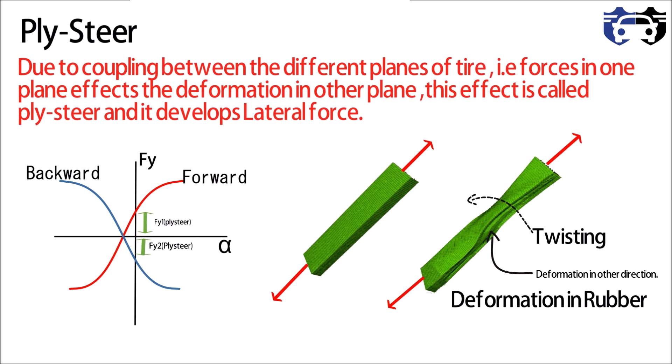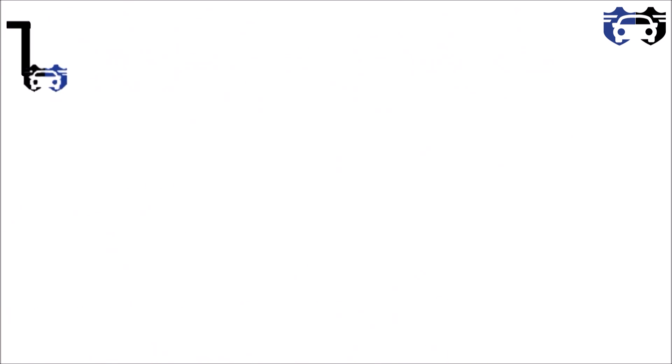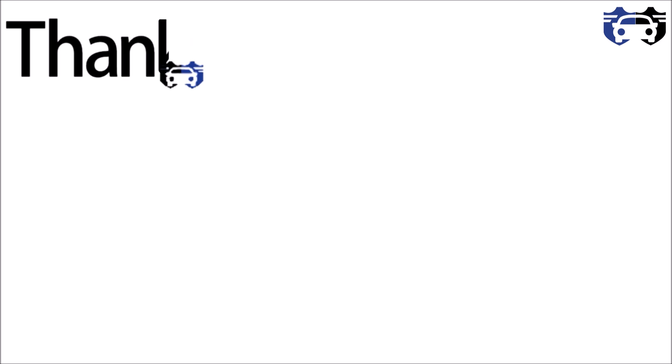So this is how lateral force is generated due to ply steer, conicity, and camber thrust. Thanks for watching.